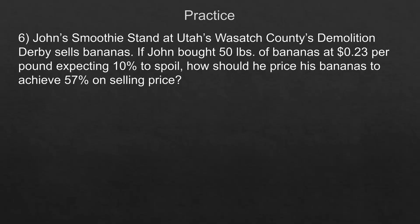This next one is a slightly different type of question. John's smoothie stand at Utah's Wasatch County's demolition derby sells bananas. If John bought 50 pounds of bananas at 23 cents per pound, expecting 10% to spoil, how should he price his bananas to achieve a 57% markup on selling price? We don't factor in the 10% yet — first we calculate his total cost: 50 pounds times 23 cents per pound equals $11.50.